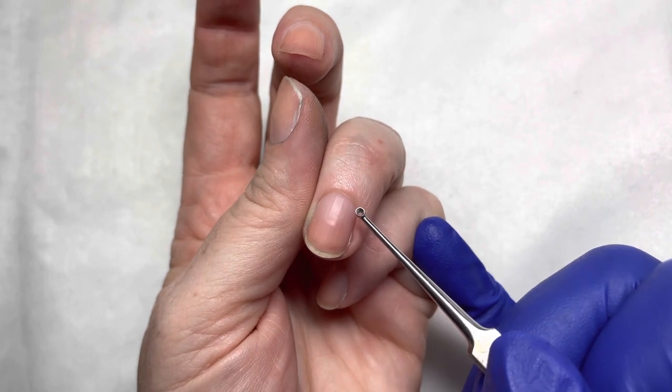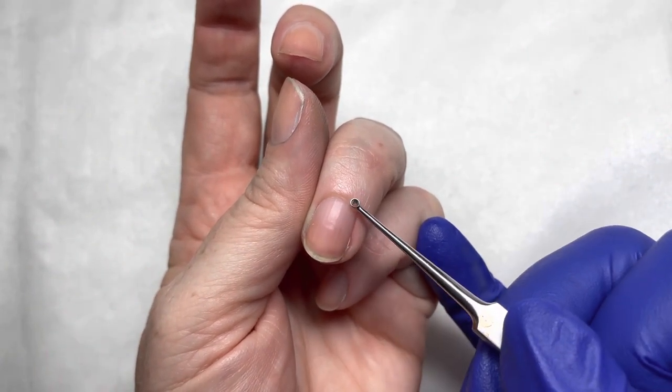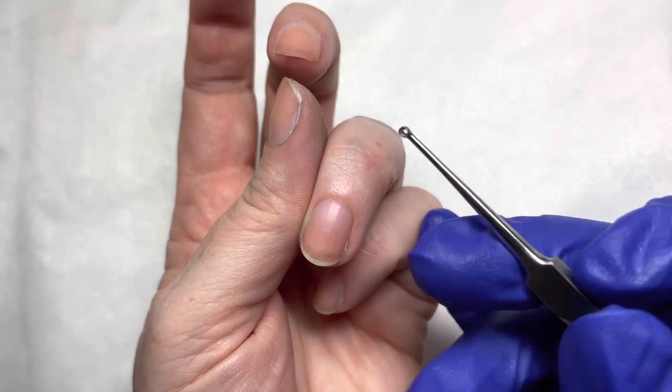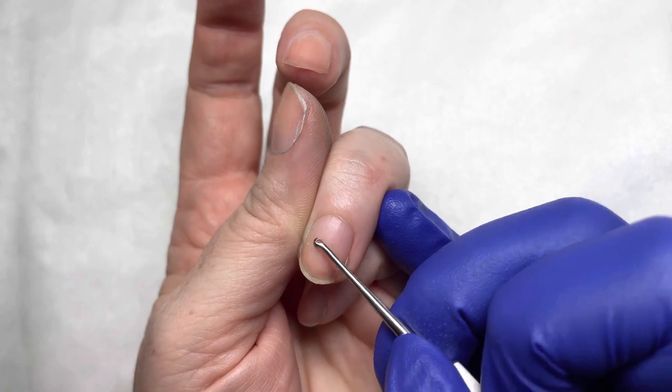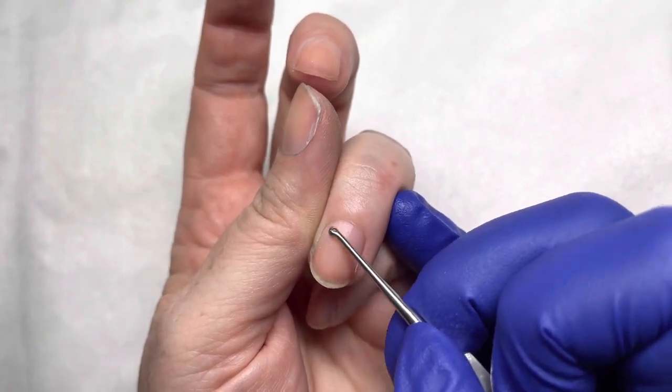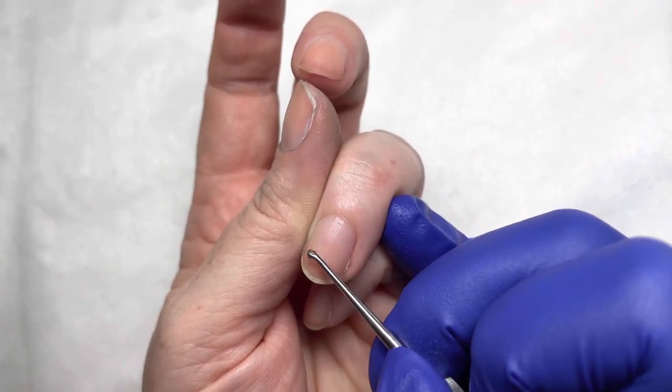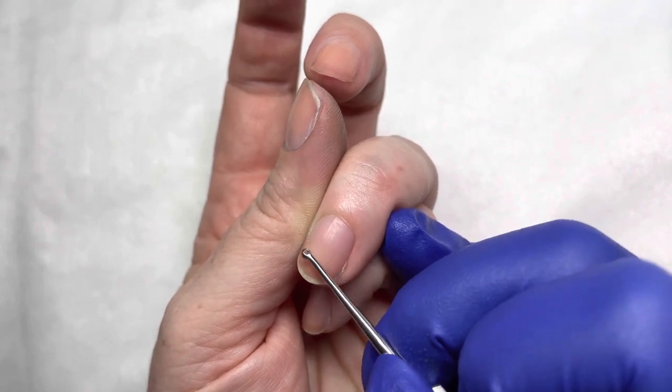Cuticle is actually a transparent tissue that grows out with the nail plate as it grows. So the cuticle is actually something that is out here on the nail plate that you can't see until it gets roughed up a little bit. See it coming up there? Those little bits and pieces.